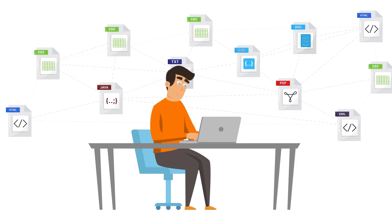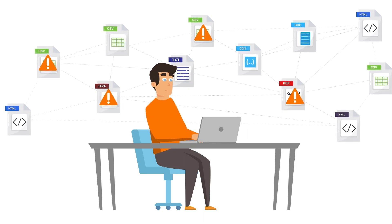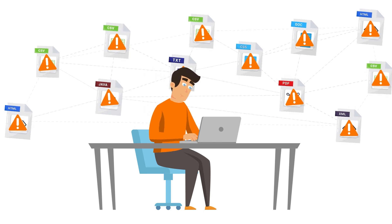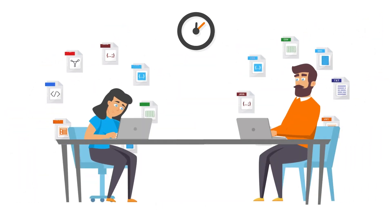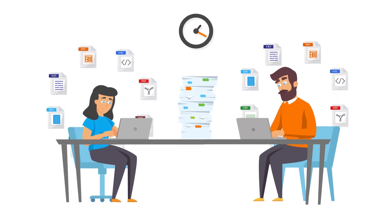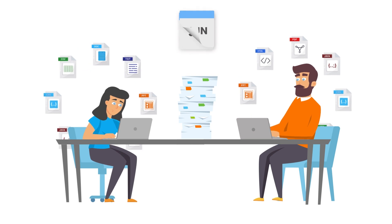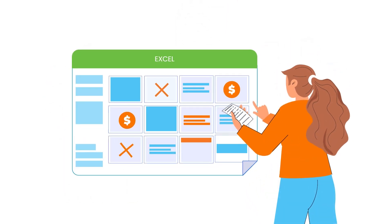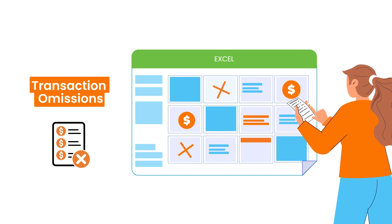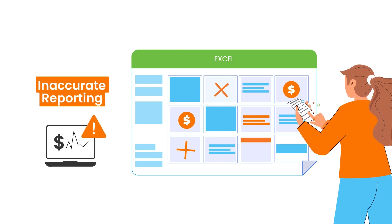Accounting processes like financial close and account reconciliation are prone to tens, if not hundreds of accounting errors and omissions. While your accountants spend an inordinate amount of time trying to identify these accounting anomalies, it is an arduous process to go through month after month. This results in unidentified data entry errors and omissions, potentially resulting in fraudulent activities and inaccurate reporting.